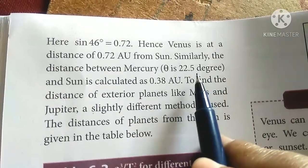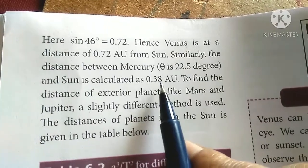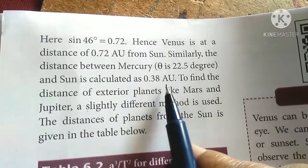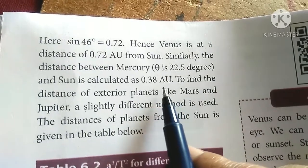Mercury's value is 0.38 astronomical units from the sun.